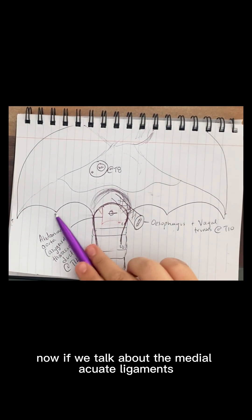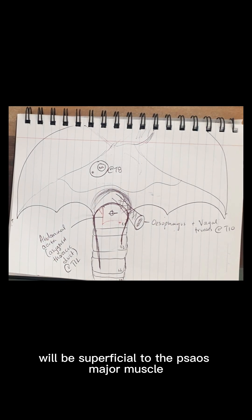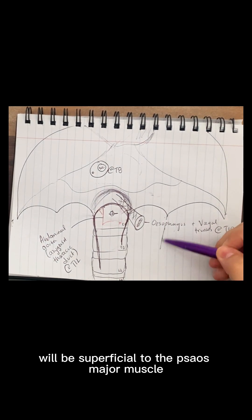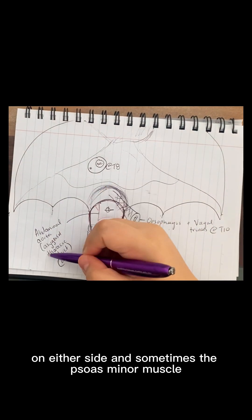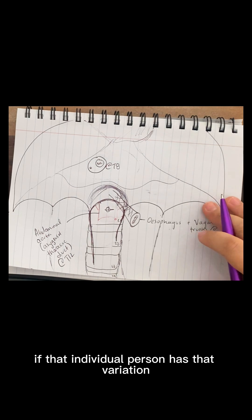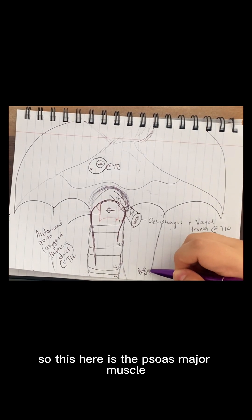Now, if we talk about the medial arcuate ligaments, the medial arcuate ligaments will be superficial to the psoas major muscle on either side. And sometimes the psoas minor muscle if that individual person has that variation. So this here is the psoas major muscle.